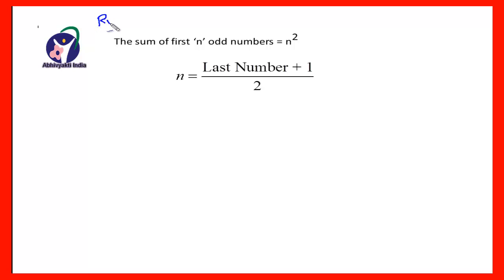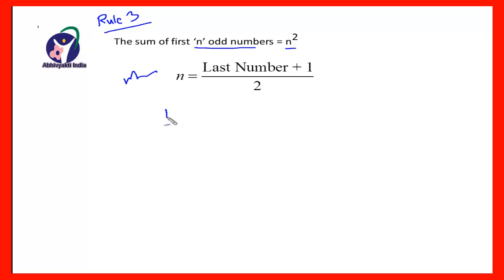Rule 3: the sum of the first n odd numbers is equal to n², where n = (last number + 1) / 2. Suppose you have to find the sum of the odd numbers from 1 to 50, that is 1 + 3 + 5 + 7 + ... + 49.